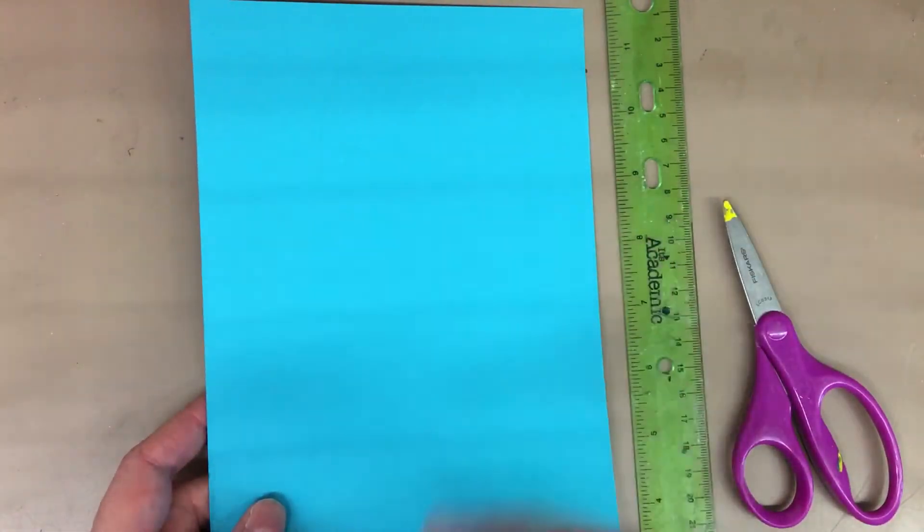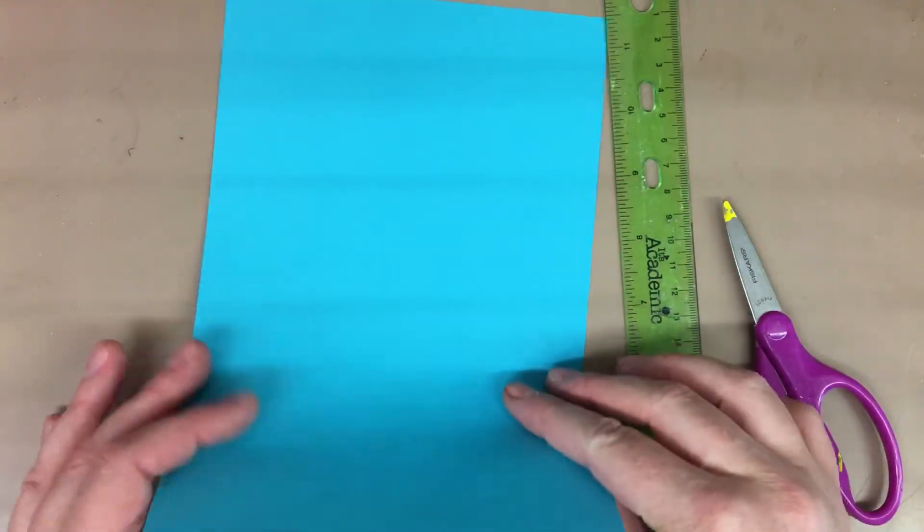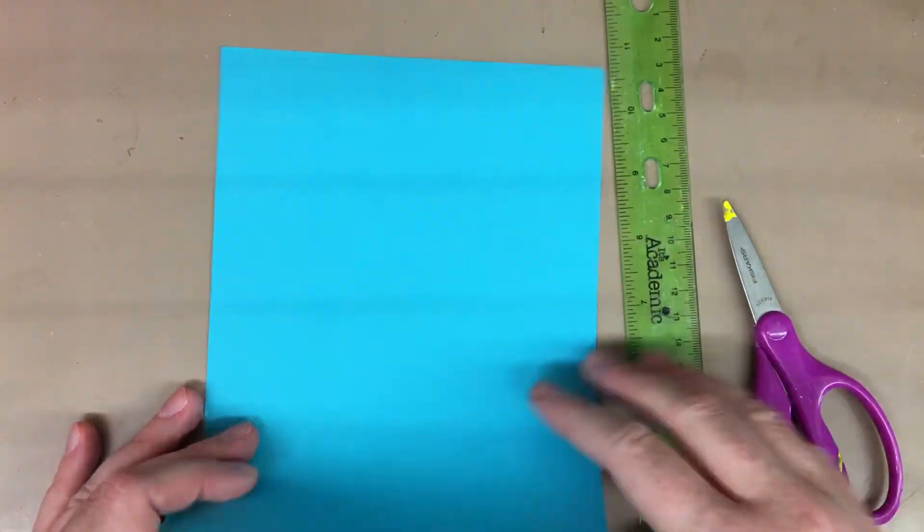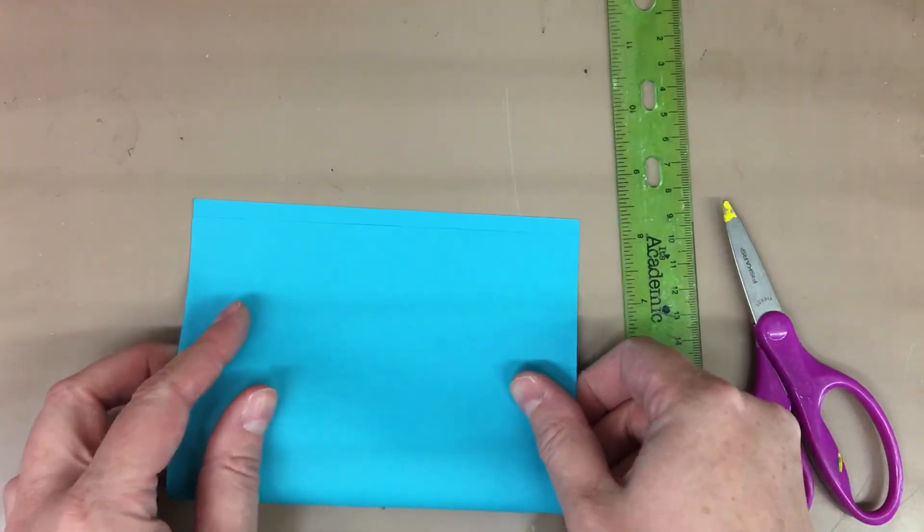You can start off with a rectangle or a square, which is normally what I work from. This is a six by nine sheet of paper. I'm going to fold it in half.